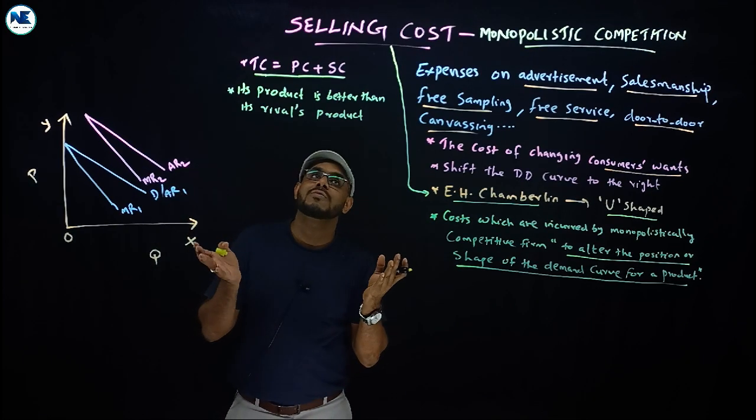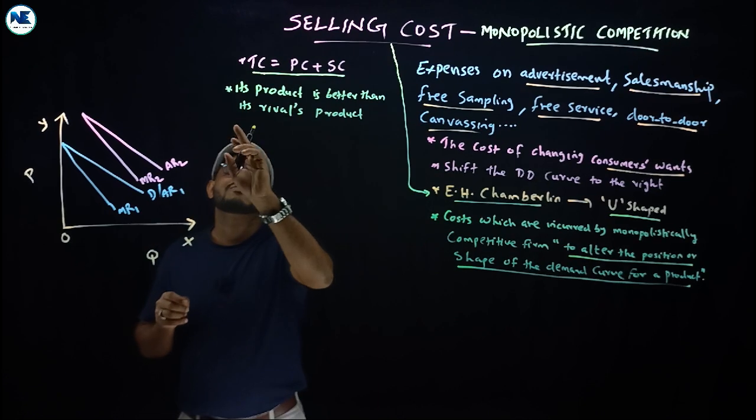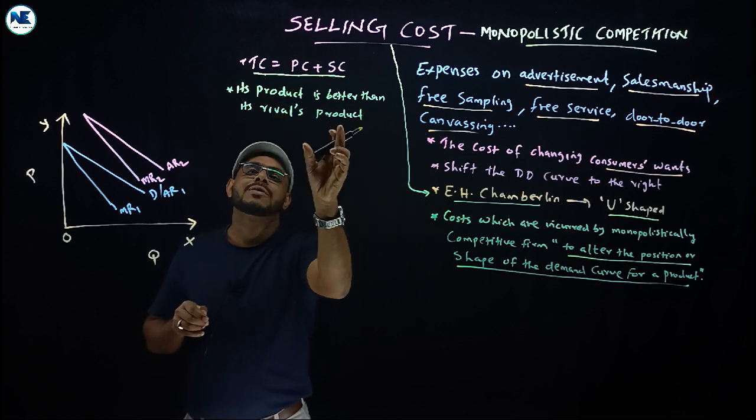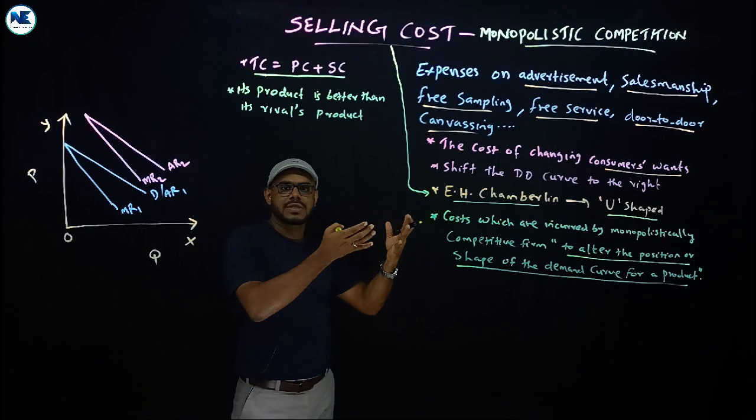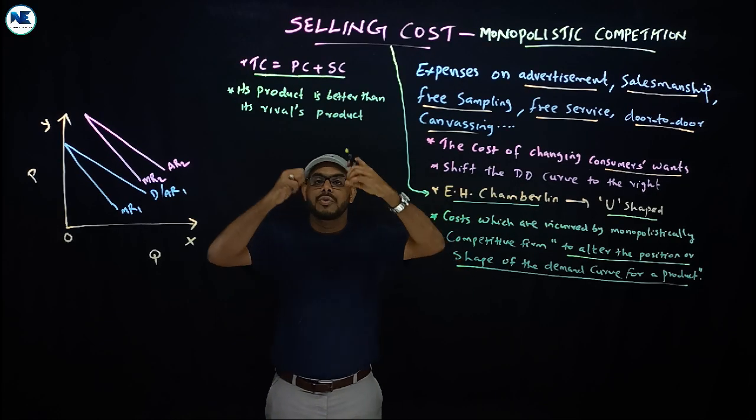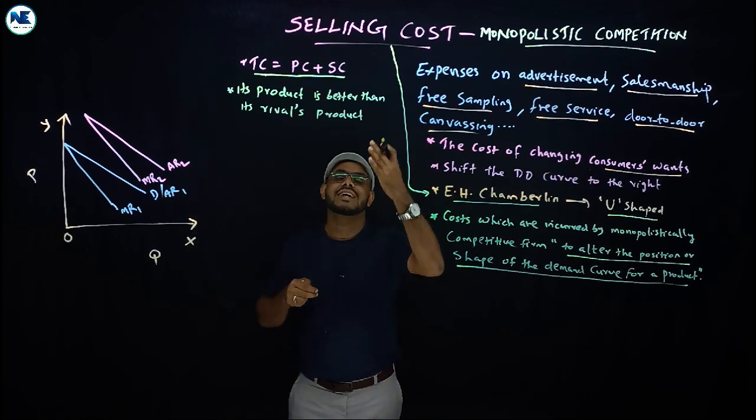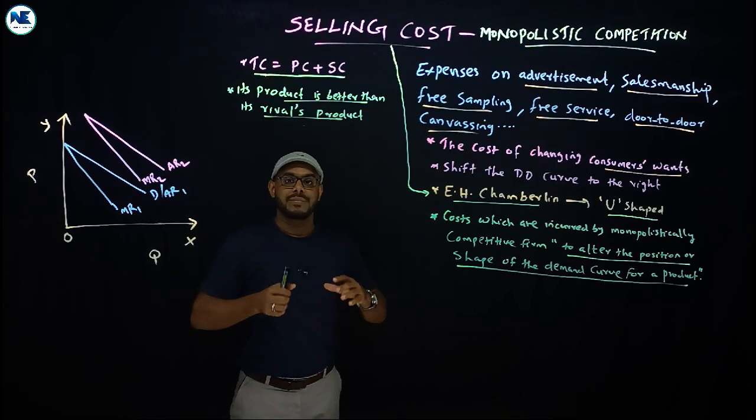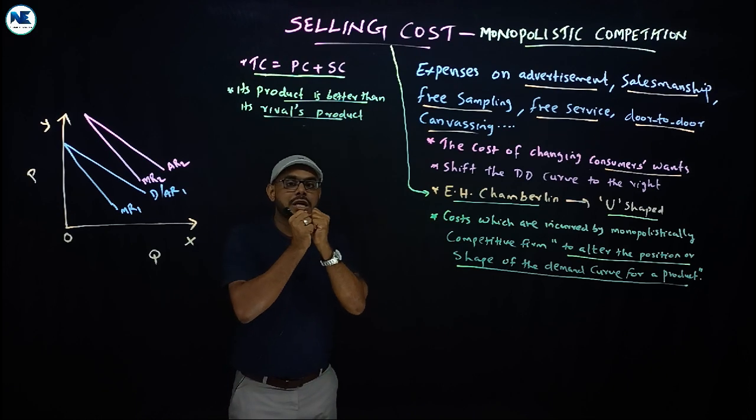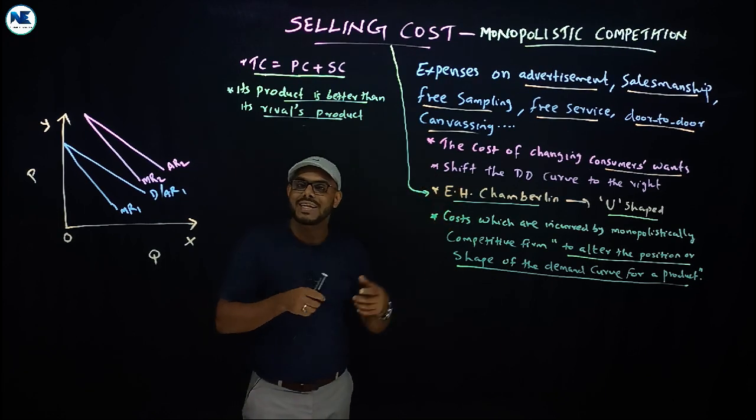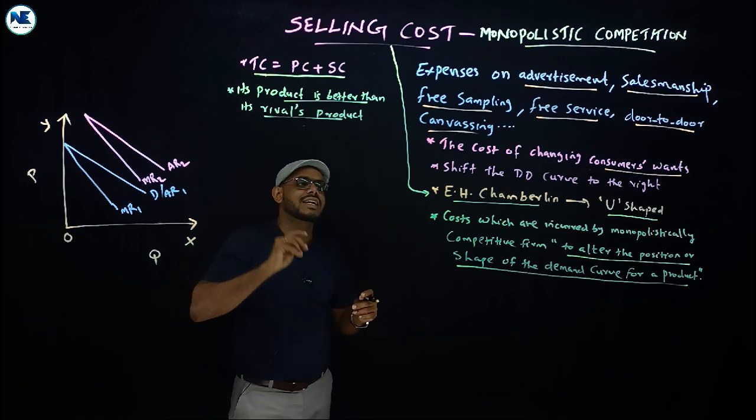What is the intention or purpose of selling cost? Through selling cost, the firm is trying to claim that its product is better than its rivals' product—rivals meaning other firms. For example, Pepsi claims that this soft drink is good, is superior to other products like Coca-Cola, 7-Up, etc. The product is better than its rivals' product.